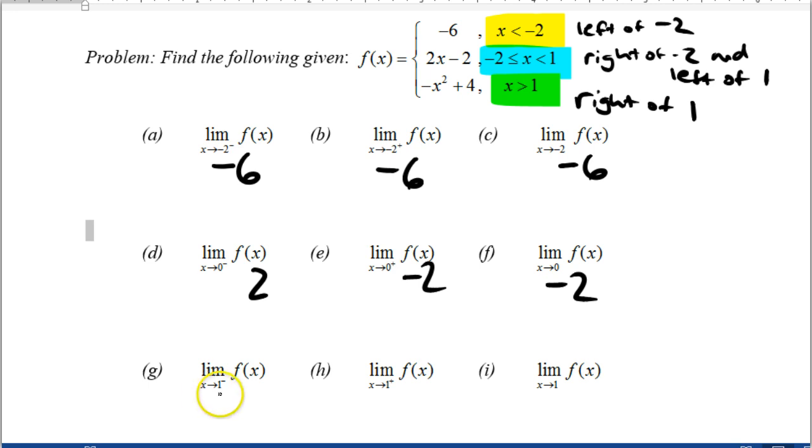Alright lastly let's look at the limit as x approaches 1 from the left. Well if we're approaching 1 from the left that's the blue piece and if I plug in 1 here I'm going to get 2 minus 2 which is 0.